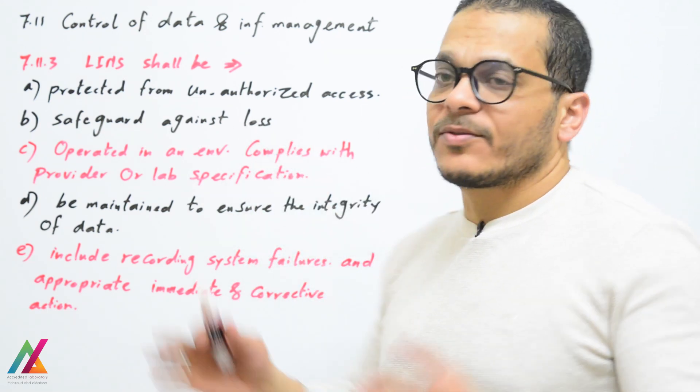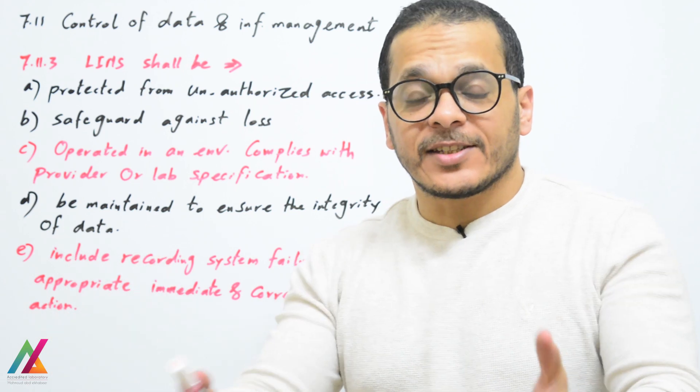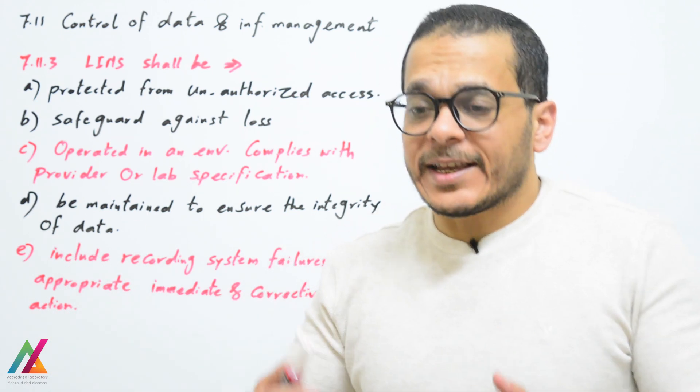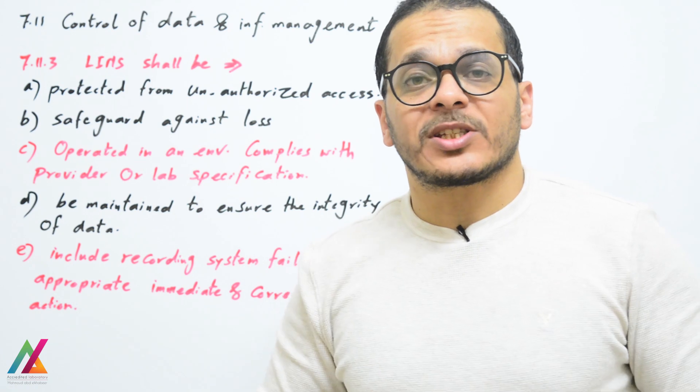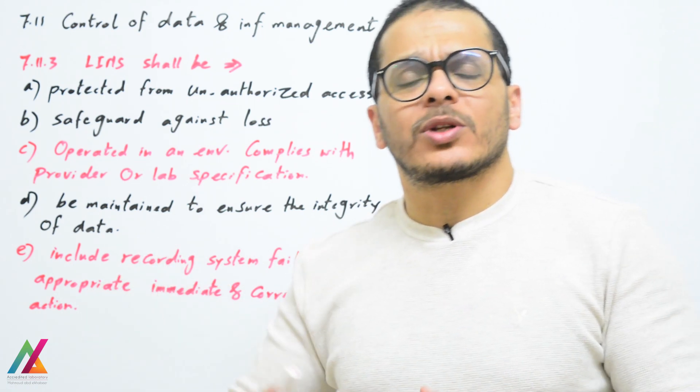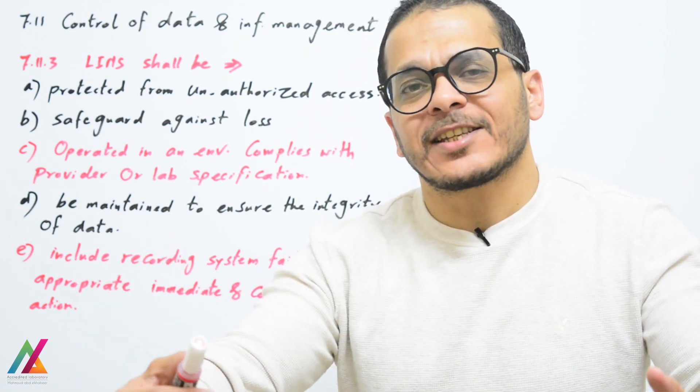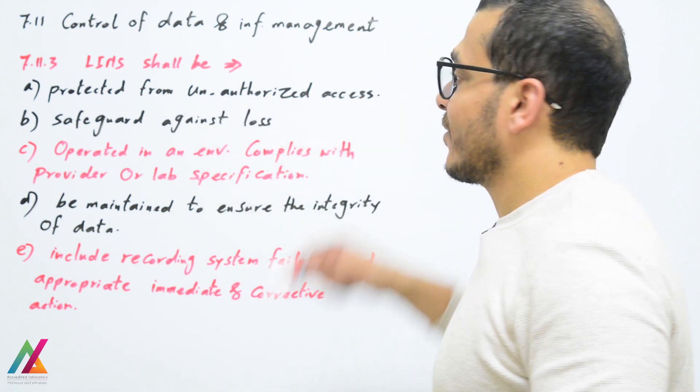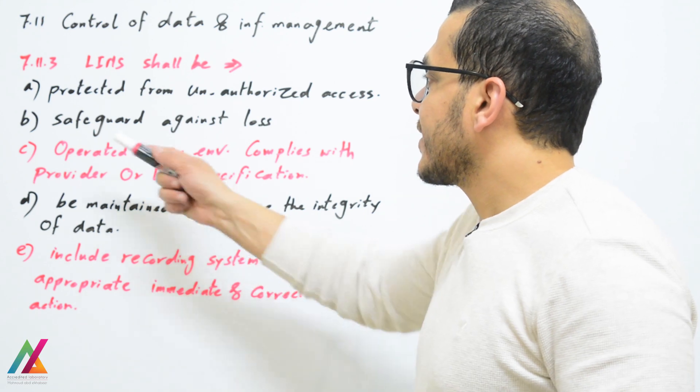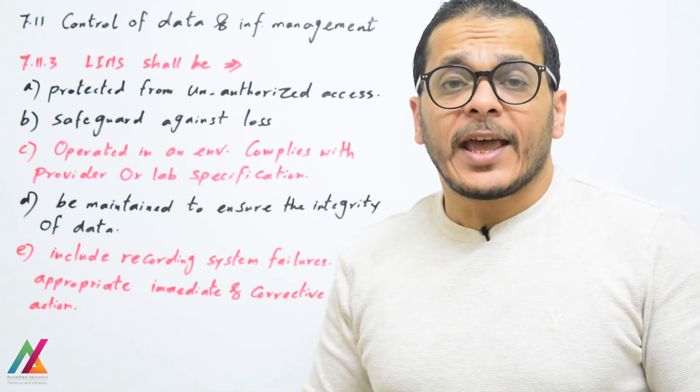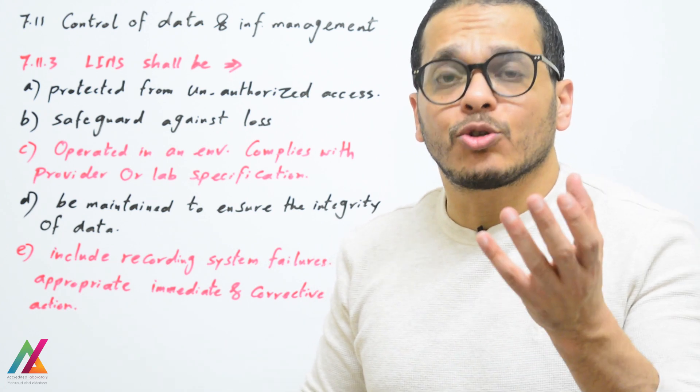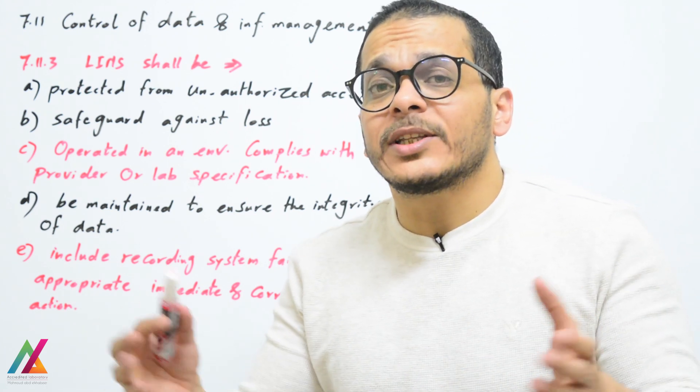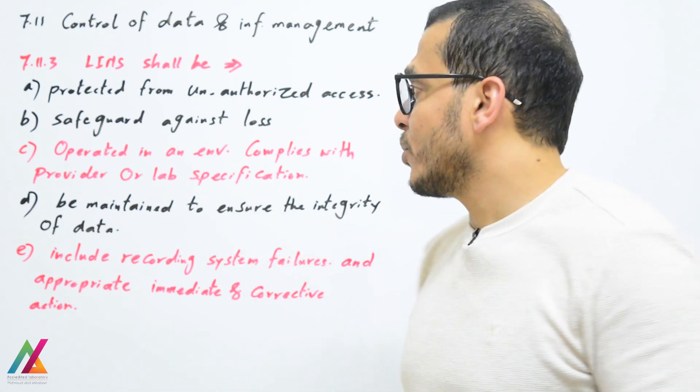LIMS shall be protected from unauthorized access. First point: access inside LIMS - only authorized persons can access their specific data or information, so not every person inside the lab can access every data inside LIMS. Safeguard against loss by using backup. You should have backup for all data and information operations inside LIMS because it can be lost.